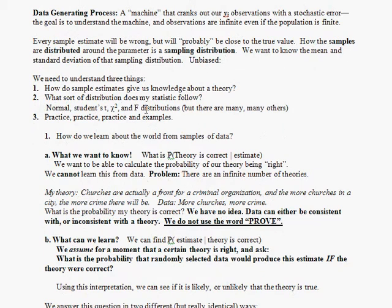So here are some things we need to go through and think about systematically when we go through this process of learning about the world through collecting data. First, this epistemology idea. How do we learn about the world? How do sample estimates give us knowledge about a theory? Second, what sort of distribution does my estimate follow? Sometimes it'll be normal, sometimes it'll have a student's t distribution, sometimes a chi-squared, and sometimes an F, and I'll take you through how you can determine that without having to memorize. And lastly, you just need lots of practice and thinking about what you're doing.